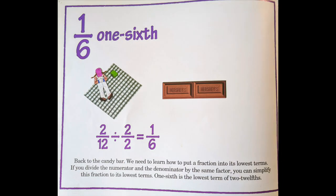One sixth. Back to the candy bar. We need to learn how to put a fraction into its lowest terms. If you divide the numerator and the denominator by the same factor, you can simplify the fraction to its lowest terms. One sixth is the lowest term of two twelfths.